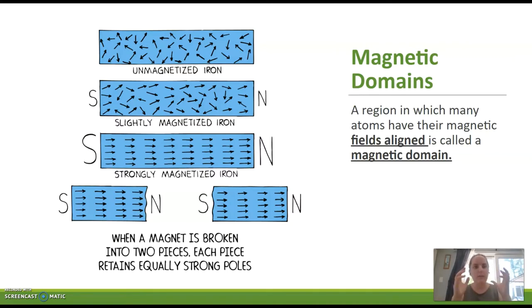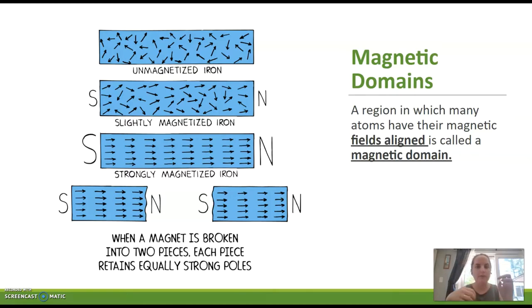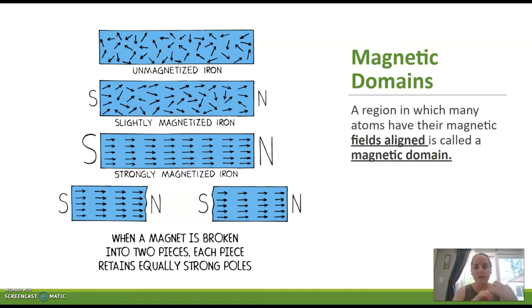When we have a material that can be magnetized — like iron, cobalt, or a ferrous material — we can actually align those clusters of atoms. Those clusters of aligned atoms are called magnetic domains. Think about the spins of those electric charges — we want to arrange them so they're all going the same way. If we slightly magnetize it, we can see those domains getting more and more aligned. If we keep rubbing that iron over a magnet, those domains are going to align with the magnet itself, making a stronger magnet. If you break a magnet, it still has both poles — you'd still have two magnets.